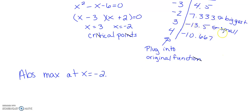Negative 13.5 is my smallest number, but my absolute min will be located at x equals 3.